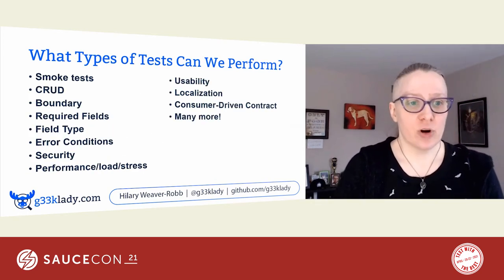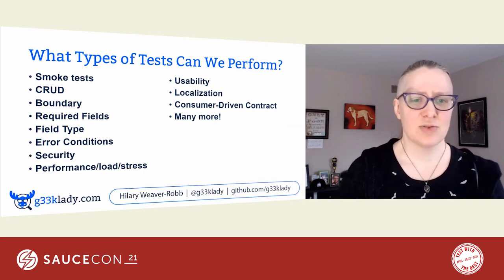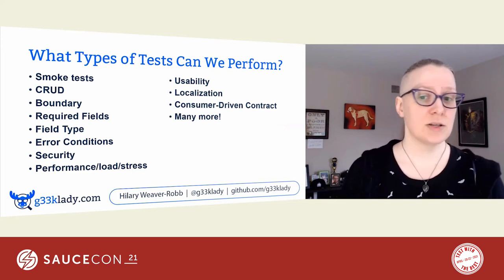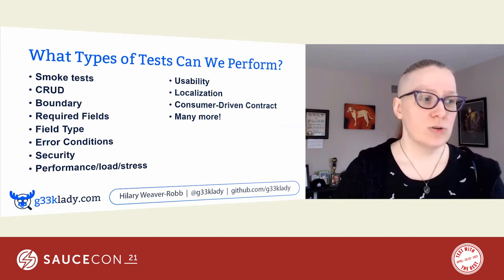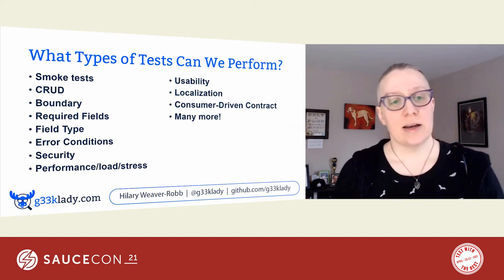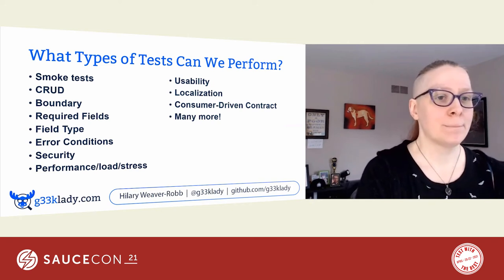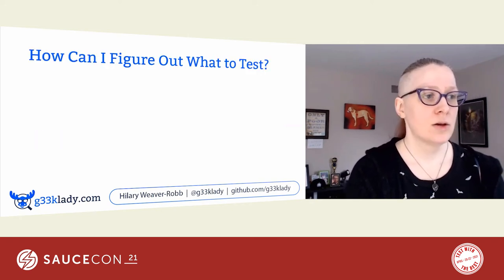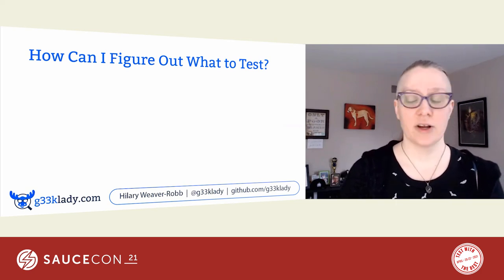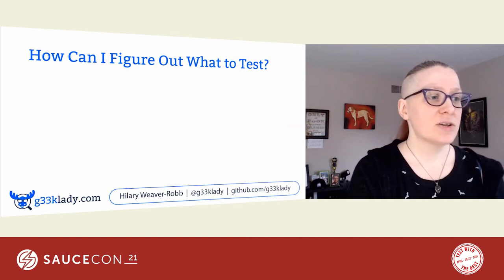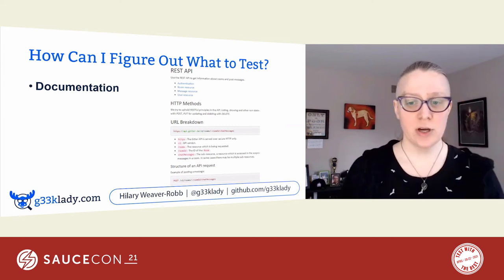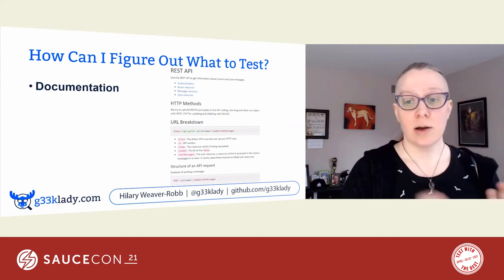What types of tests can we perform on an API? Basically all the same as a regular user interface — any other kind of test, even usability testing. Someone or something is consuming your API, so it should be usable. We'll look at some of our common tests in the UI and how they translate to the API in a little bit. So now how can I figure out what to test? There are all kinds of ways we can learn about our API and start figuring out how to test it — it's all essentially some kind of documentation just in different forms.